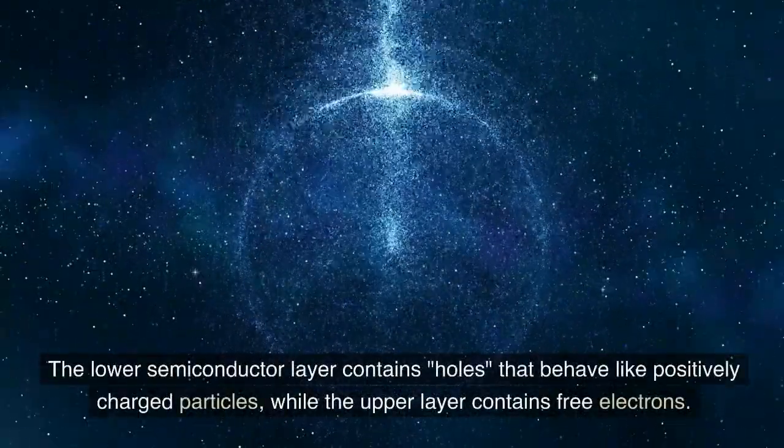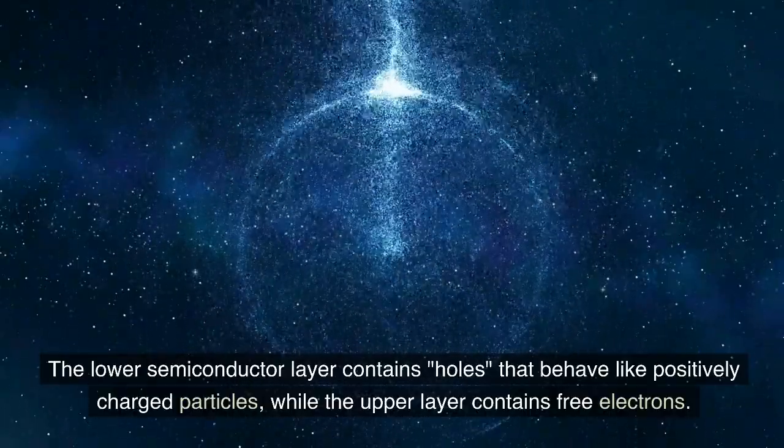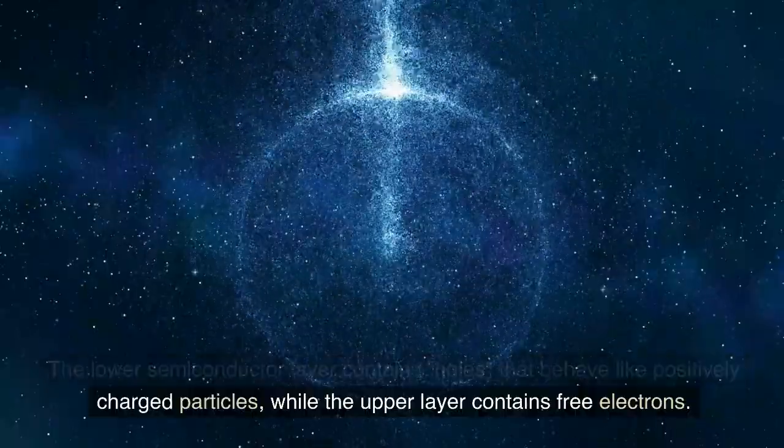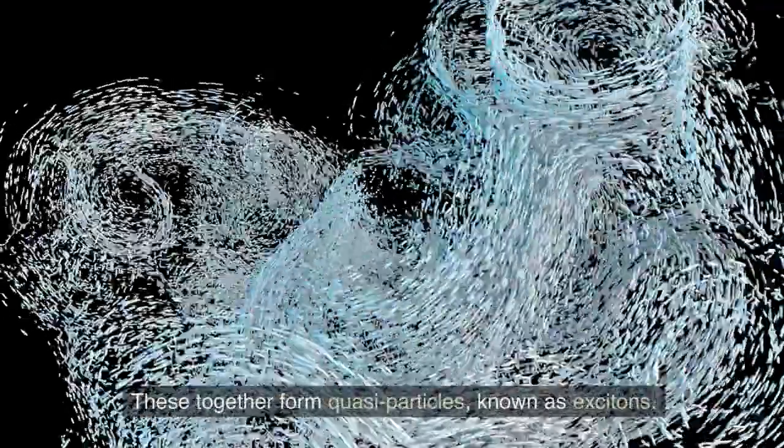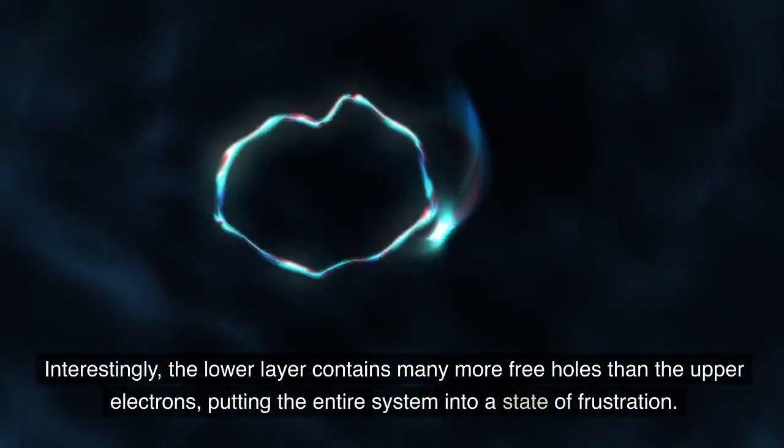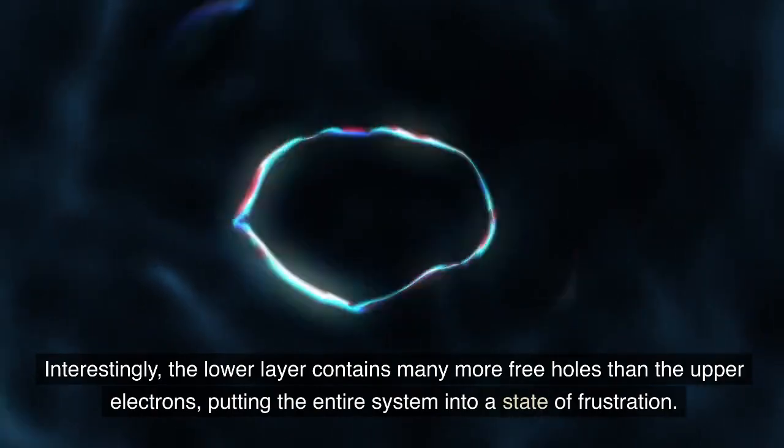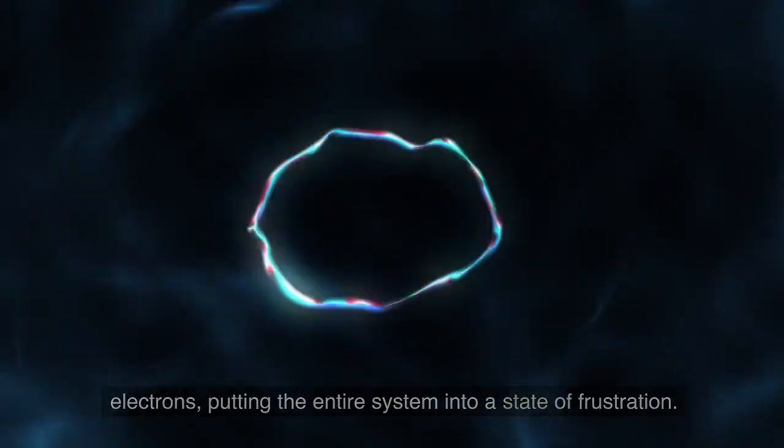The lower semiconductor layer contains holes that behave like positively charged particles, while the upper layer contains free electrons. These together form quasi-particles, known as excitons. Interestingly, the lower layer contains many more free holes than the upper electrons, putting the entire system into a state of frustration.